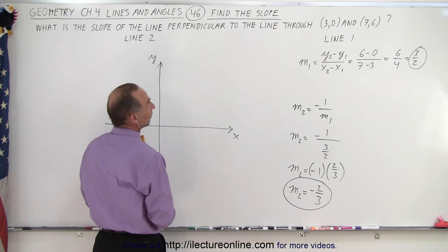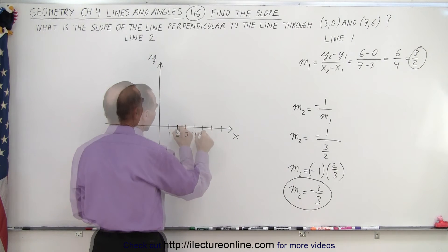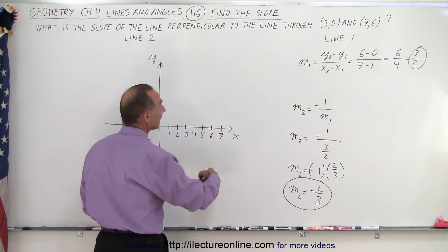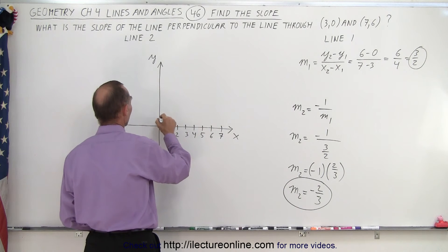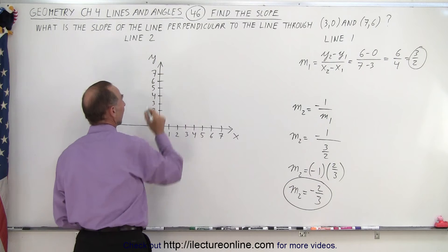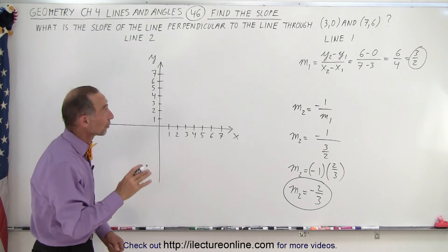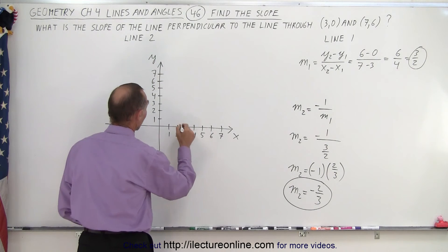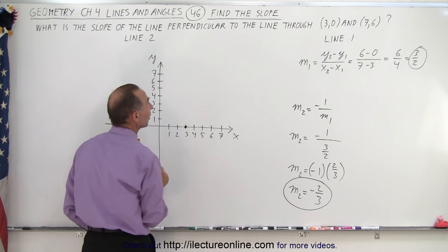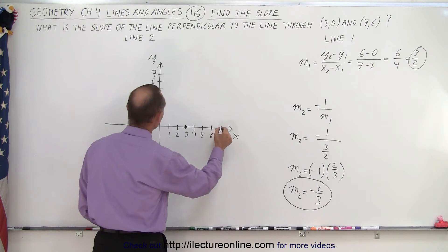In the x-direction, we have 3, 0. So 1, 2, 5, 6, and 7. In the y-direction, we have 1, 2, 3. And now let's find the two points. The point 3, 0. So the x-value is 3. The y-value is 0. That's our first point. The second point is 7 and 6.